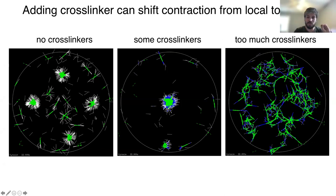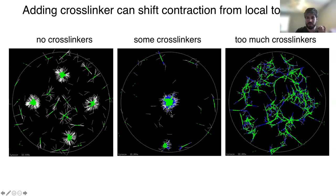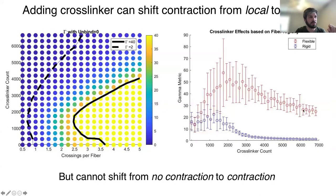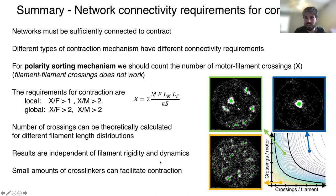If you add crosslinkers on top of the polar sorting mechanism in a very small dose, you can actually rescue global contractility. A simulation with no crosslinkers contracts only locally, but adding a little bit of crosslinkers makes it contract globally. However, if you keep adding more crosslinkers, the network stalls. This works for both flexible filaments — where you expect an onset of buckling — and for rigid filaments where you expect crosslinkers to only hurt the system.